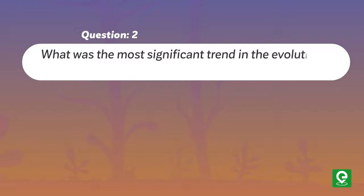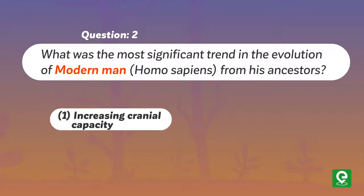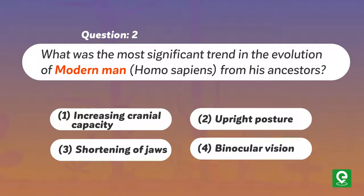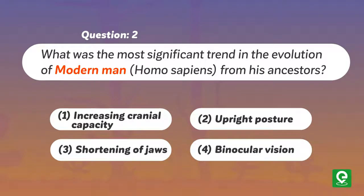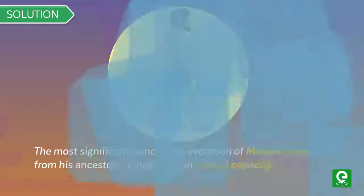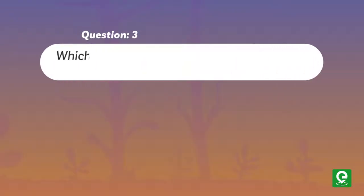Question 2: What was the most significant trend in the evolution of modern man (Homo sapiens) from his ancestors? (1) Increasing cranial capacity, (2) Upright posture, (3) Sharpening of jaws, or (4) Binocular vision. This was asked in AIPMT 2012. Solution: The most significant trend in the evolution of modern man from his ancestors is increasing cranial capacity. Hence, option 1 is correct.